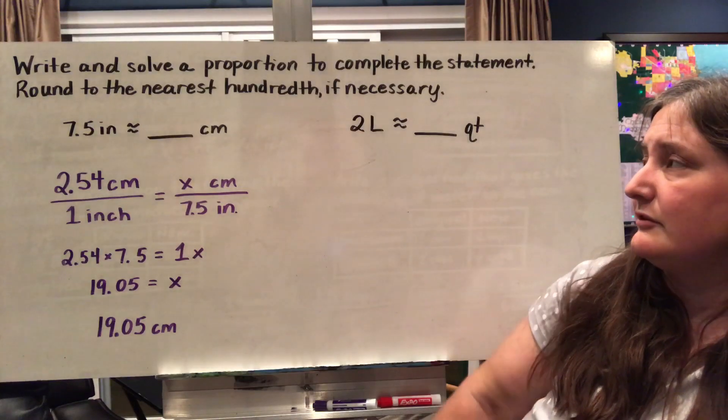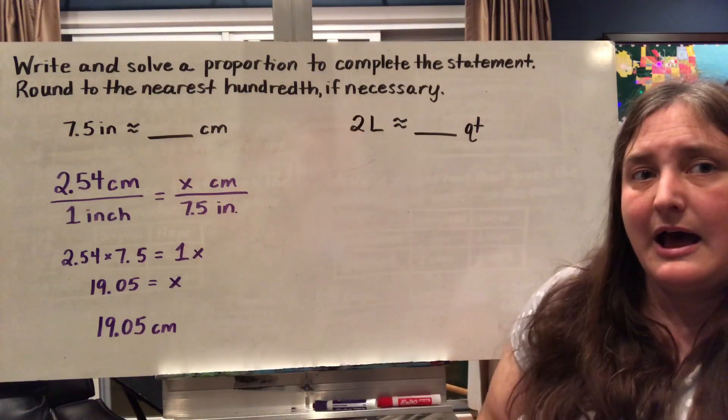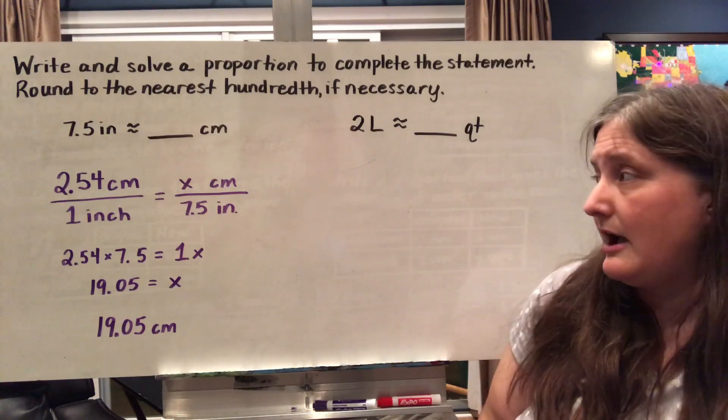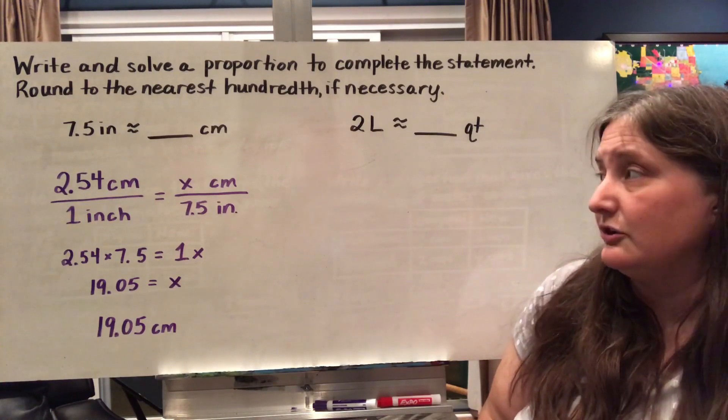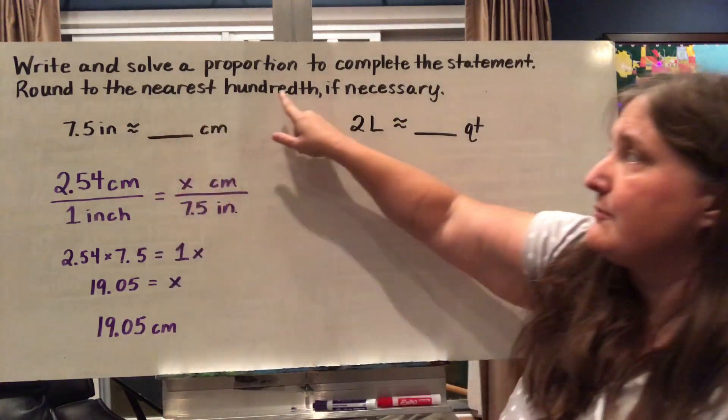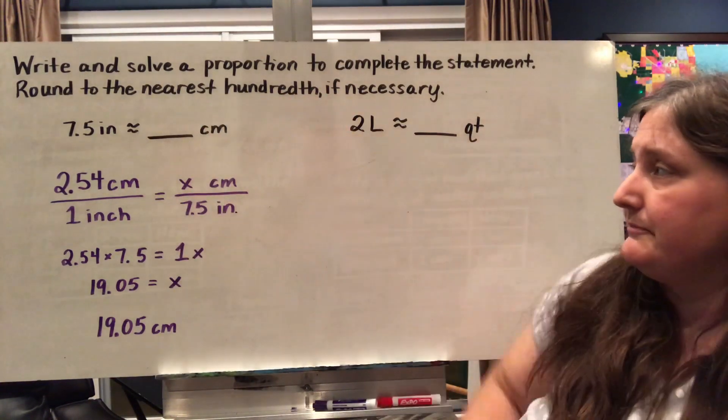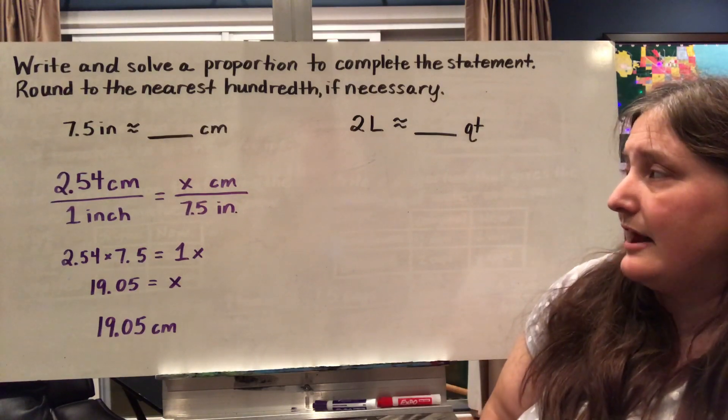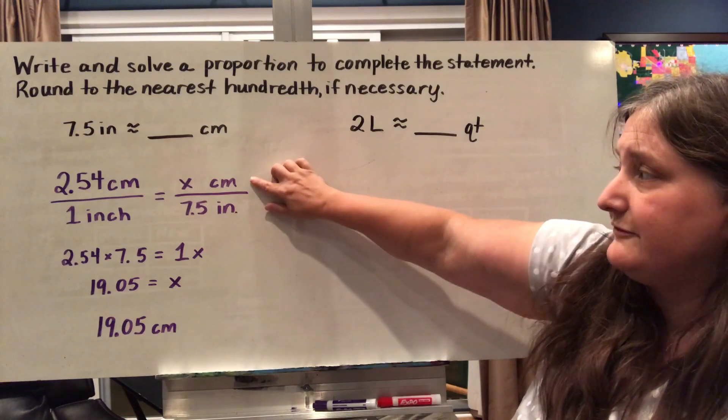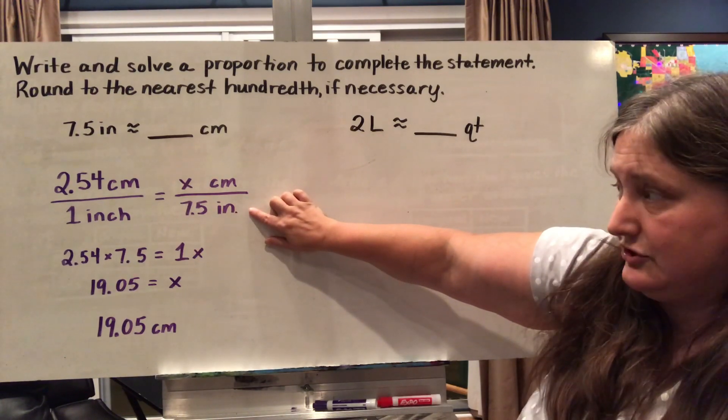So in this case, since I was converting inches to centimeters, I went on Google and I actually asked Google how many centimeters are in an inch. And it was approximately 2.54 centimeters to one inch. I rounded that to the nearest hundredth. So I can set that up equal to the information that I have, which is I'm trying to find how many centimeters are in 7.5 inches.